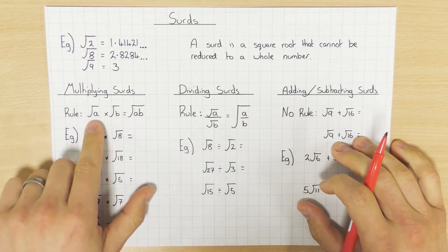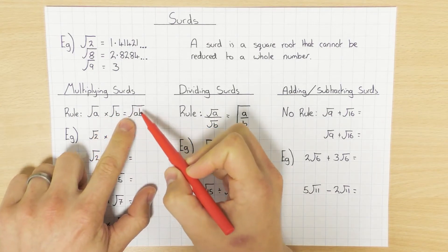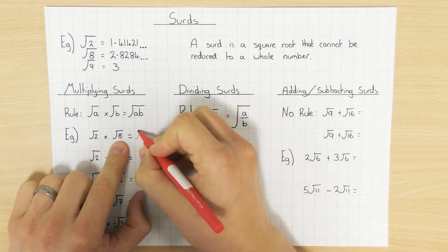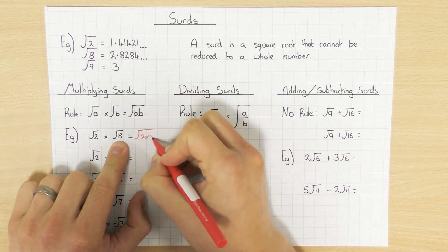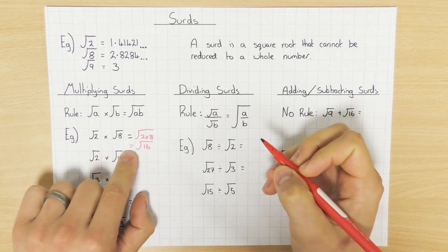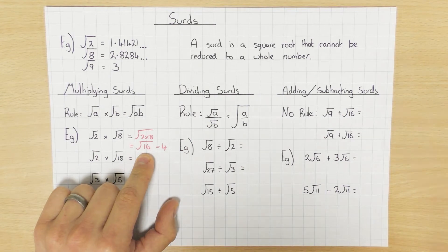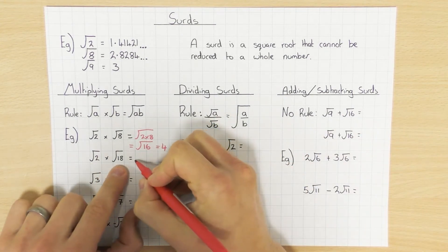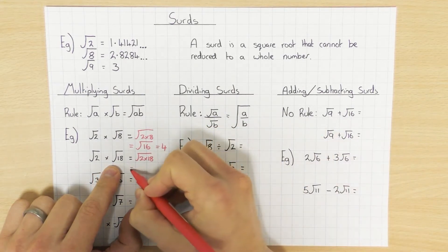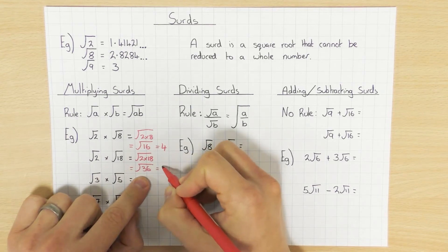Multiplying surds uses this rule: if I have the square root of something times the square root of something, that is just the same as saying the square root of that number times that number. So if I have the square root of 2 times the square root of 8, that is just the same as saying the square root of 2 times 8, which is the square root of 16, and of course the square root of 16 is 4. Next one: square root of 2 times the square root of 18, that's the square root of 36, which is 6.